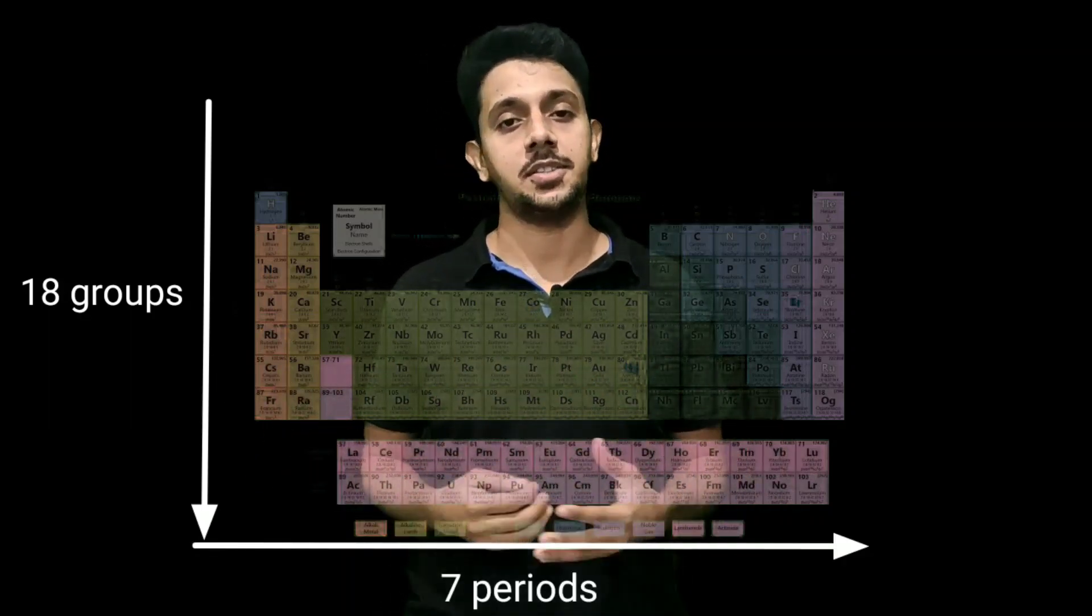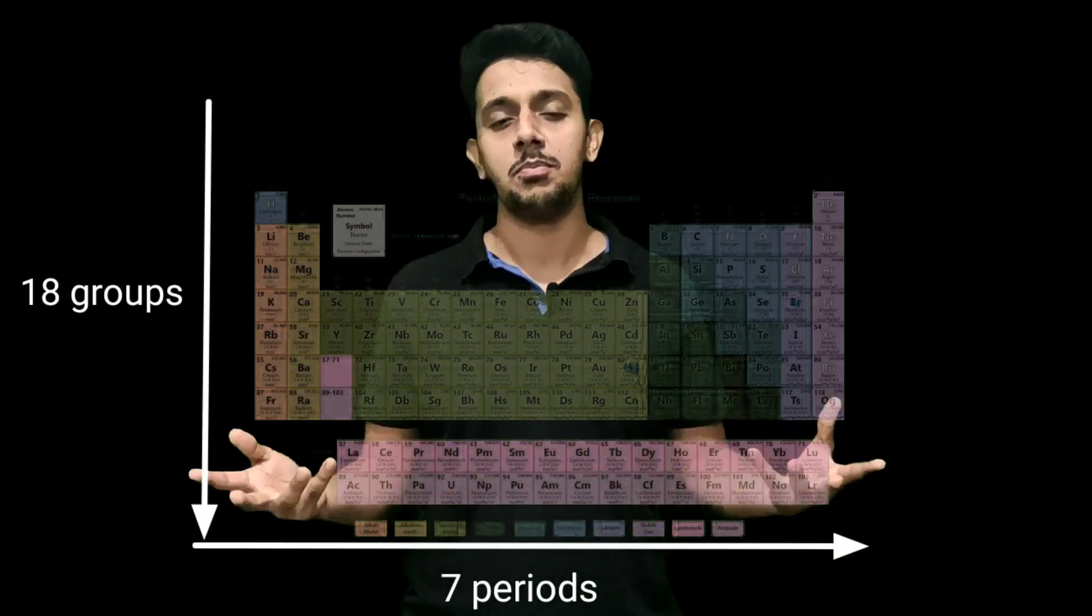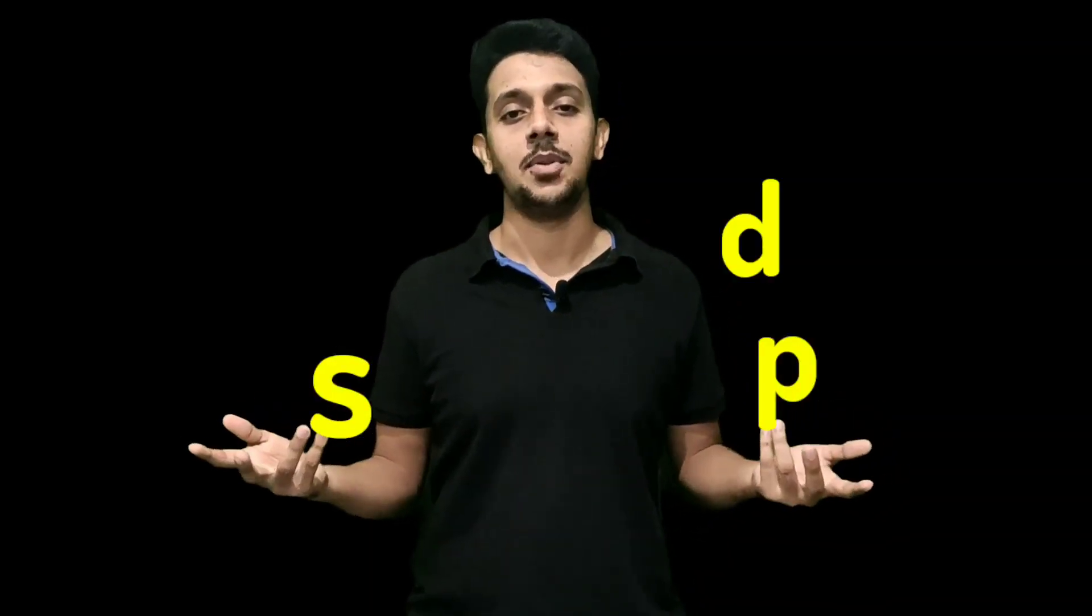Our modern periodic table splits into four blocks. Our 118 elements are categorized into four blocks of elements: S block, P block, D block, and F block. What is the reason behind this? Let's see.